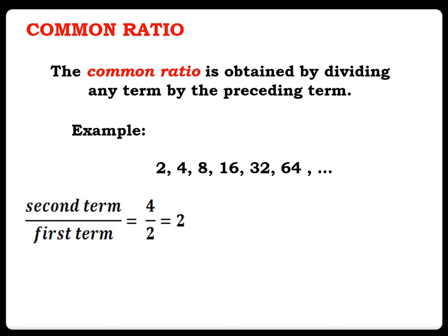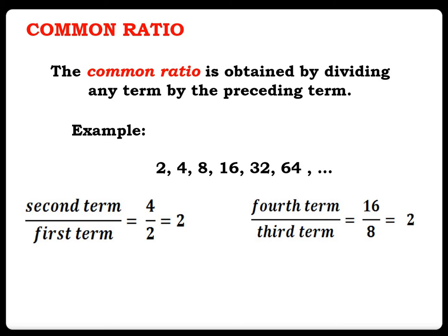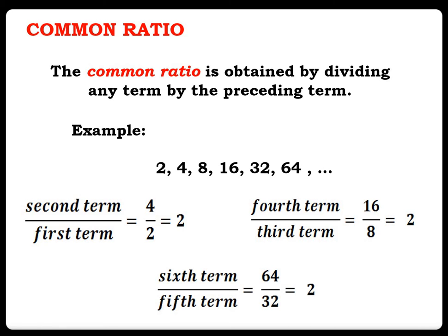We need to apply this simple formula: the second term divided by the first term, which is 4 over 2, equals 2. Also, the fourth term divided by the third term: 16 over 8 equals 2. And the sixth term divided by the fifth term: 64 divided by 32 is 2. As you can see, we have the same quotient, and that is called the common ratio.